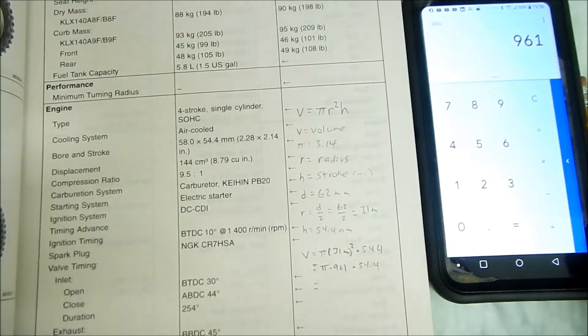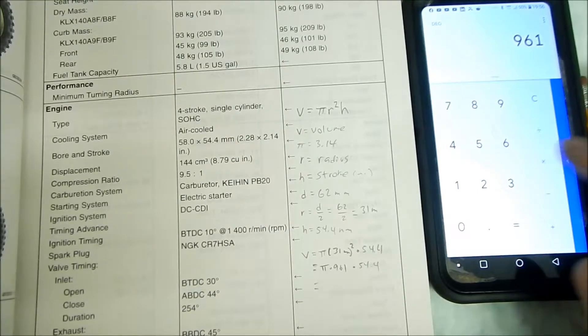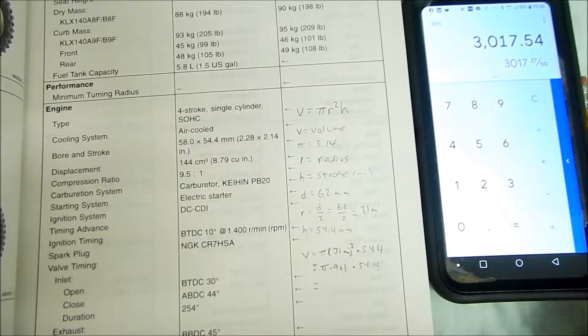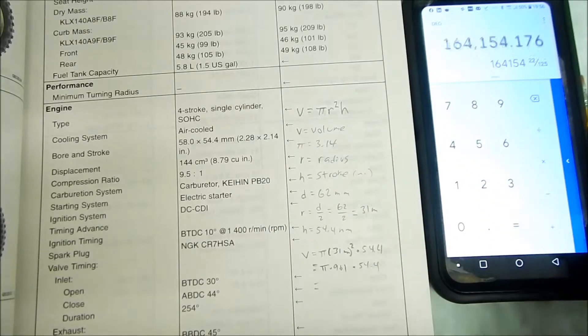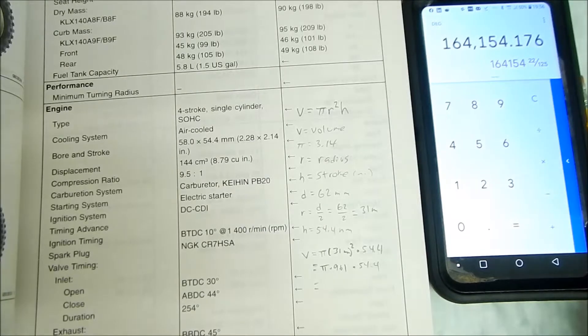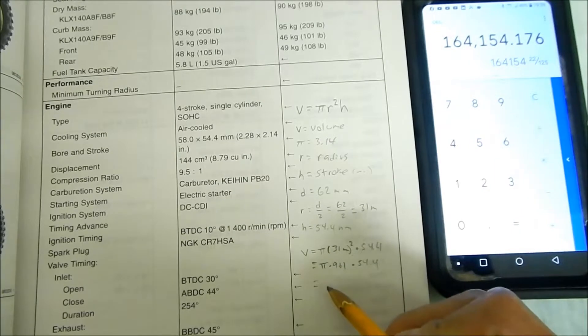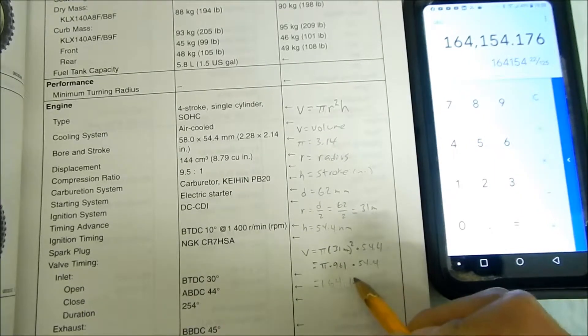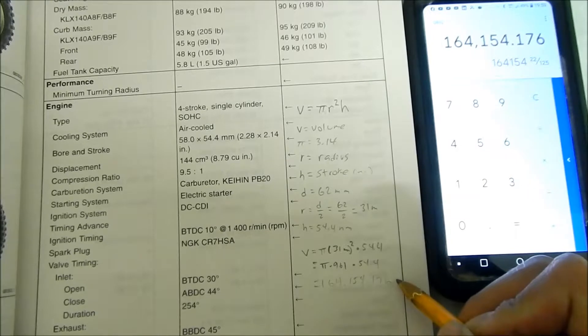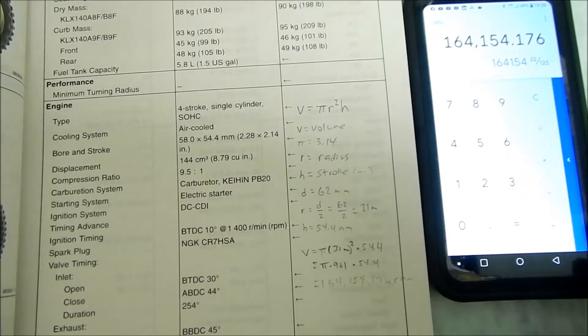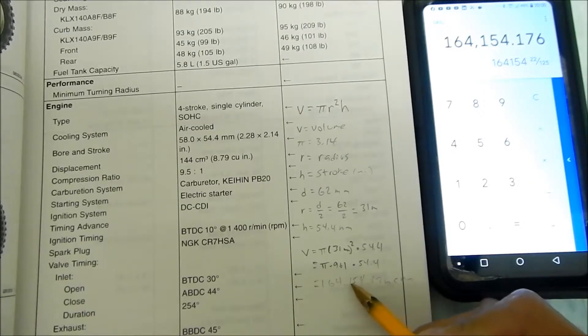Equals, we got 961 times pi, 3.14 equals 3017, and then we can multiply that times 54.4 equals, geez, some astronomical number, what's going on here? Okay, so I wound up getting this huge number here, 164,154.176. That's in cubic millimeters is what that is. So we got to make that to cubic centimeters, cc. To do that we just move it three decimal places, one, two, three.